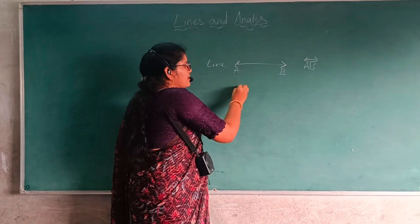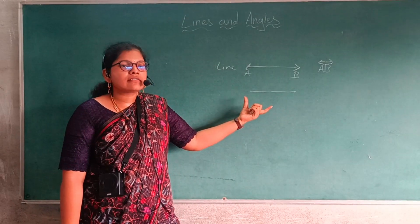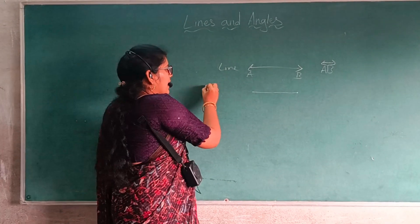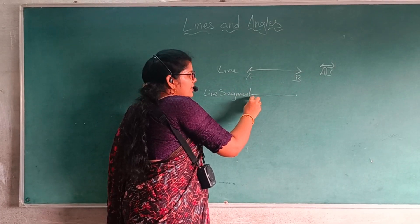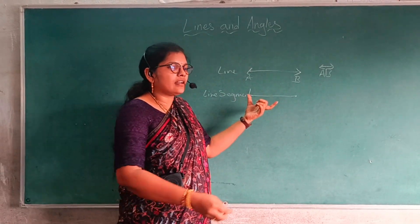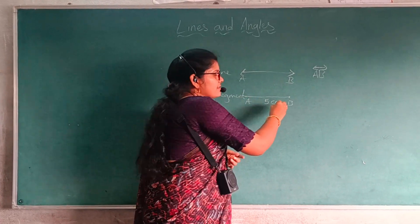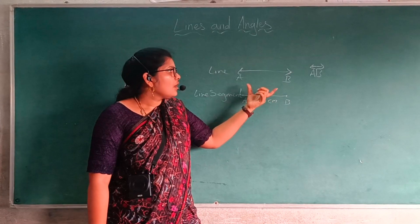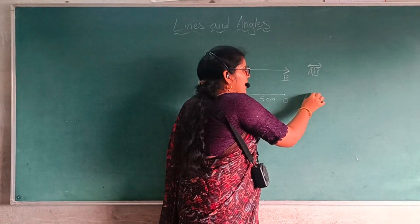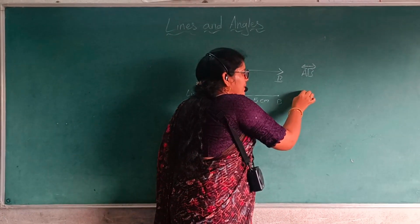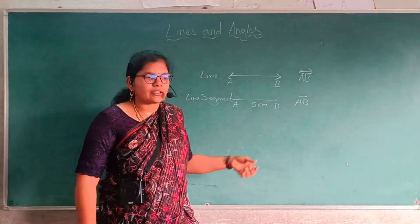Next, what is a line segment? A line segment is one which has two endpoints — it is a fixed line. It can measure about 5 cm or 10 cm. A fixed line which has no arrows is called a line segment. We can denote this as line segment AB, and the small line drawn above AB is called the indication of the line segment.